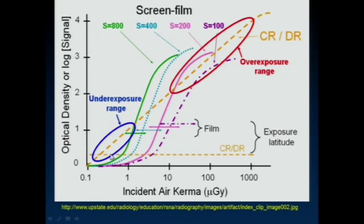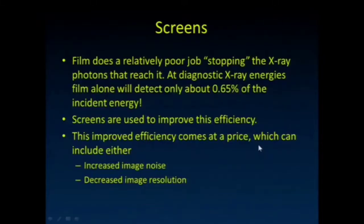In the film days, we talked about the fact that we exposed the film and then we developed the film. We really had these issues with underexposed ranges and overexposed ranges where you really weren't able to distinguish structures anymore because of the poor contrast. Film only worked well in that range. This slide really shows the linear response of digital imaging, which has a nice response over a very wide range of exposures.